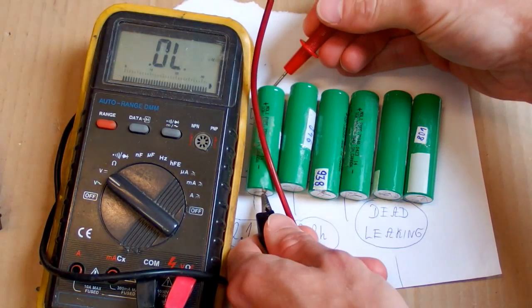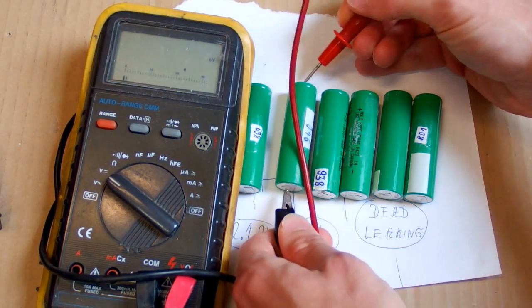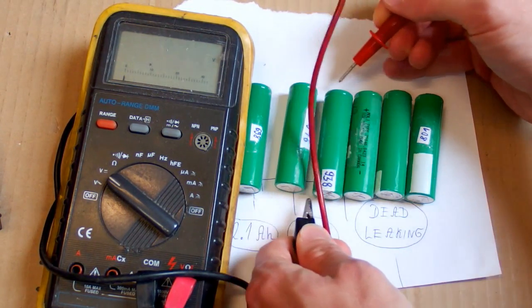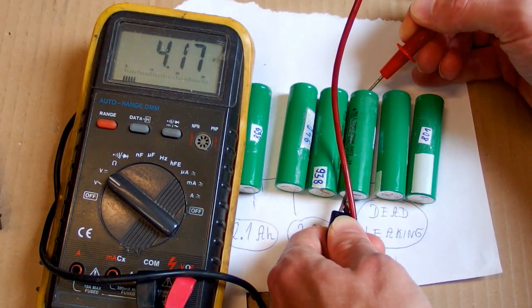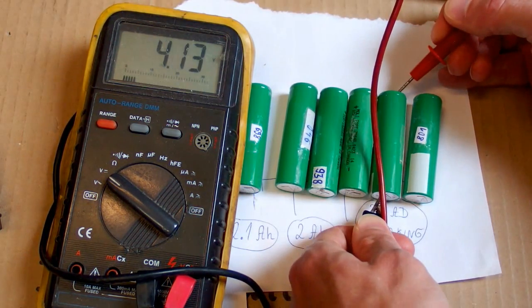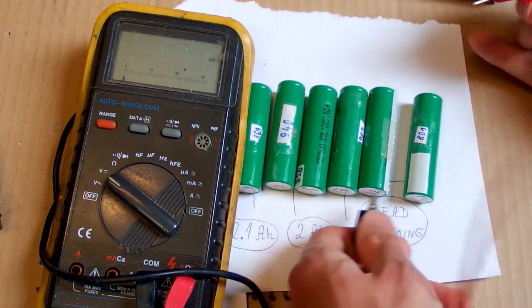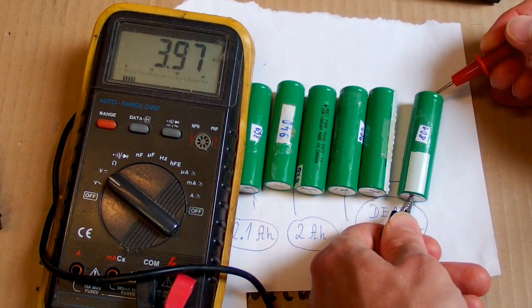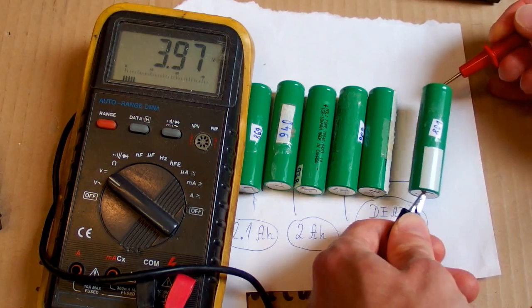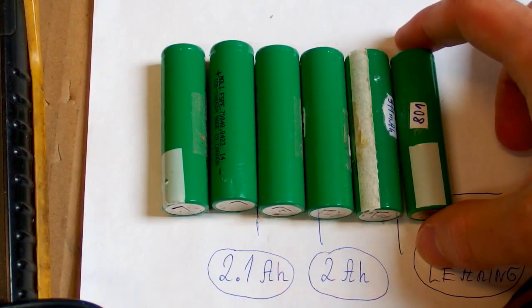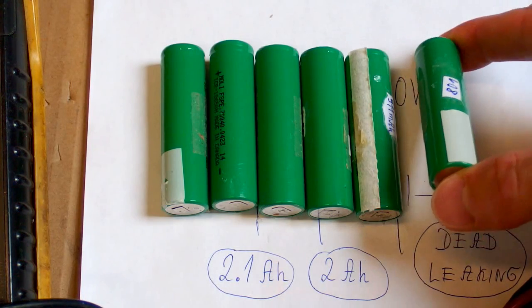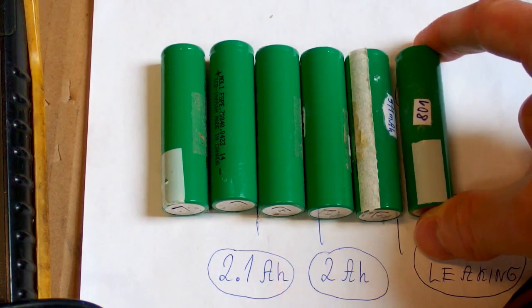And after 24 hours the charge is good, good, nice, good, still good, and this one is discharging faster. So it seems that lithium-ion batteries can develop a high self discharge after being stored at very low voltage for longer time.